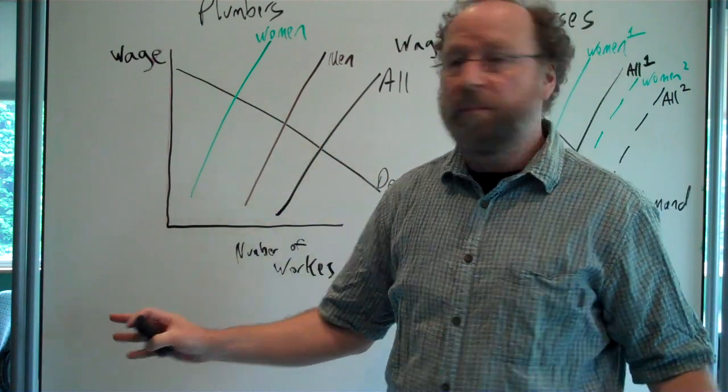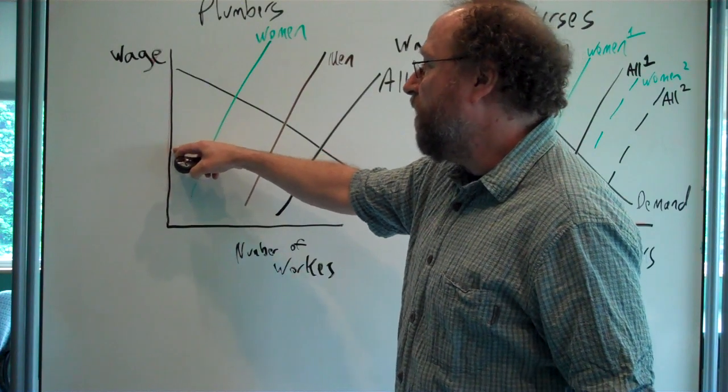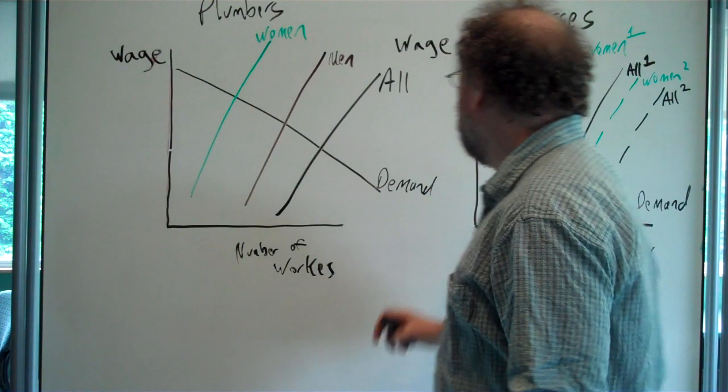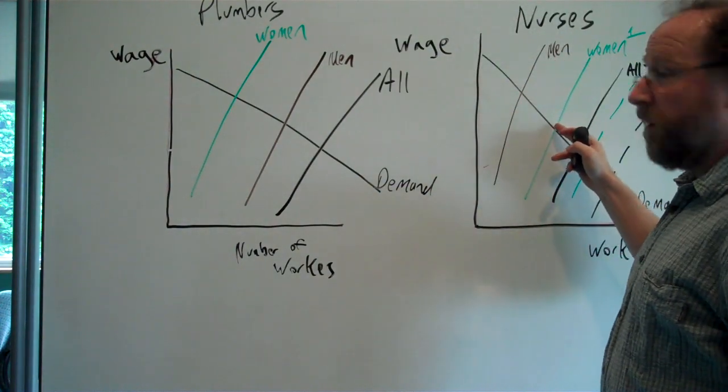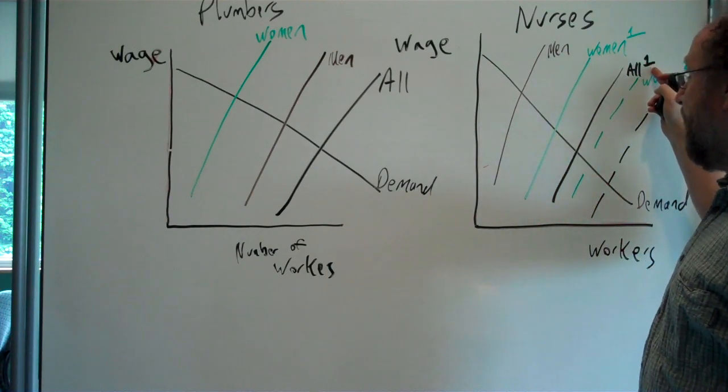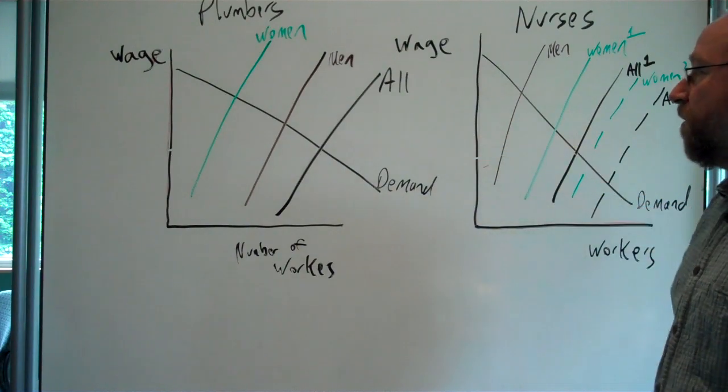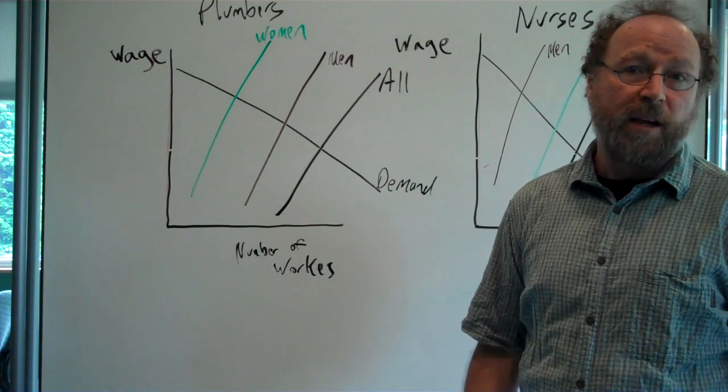That is without discrimination. You'll get a wage for plumbing, which will be about here. Without discrimination, there'll be men who want to be nurses and women who want to be nurses. You'll have a labor supply of women and men as nurses, which will give you a certain wage for nursing, which the way I've drawn it is about the same, a little less than the wage for plumbing.